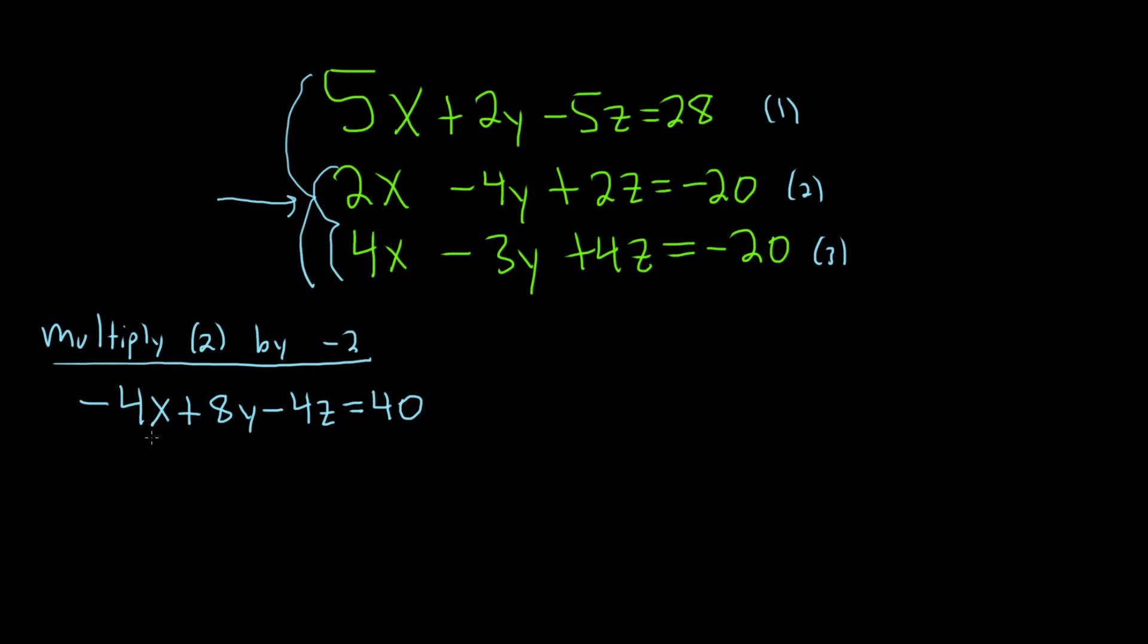I'm going to write the third one below it because we're going to add them up. So 4x minus 3y plus 4z equals negative 20. Let's add these. When you add these equations, these cancel.